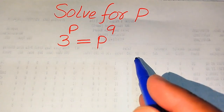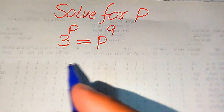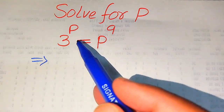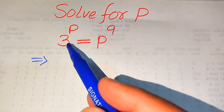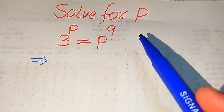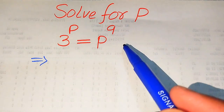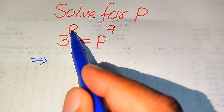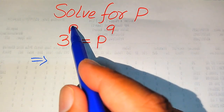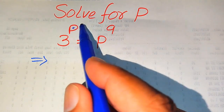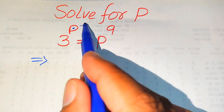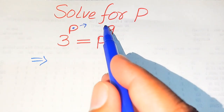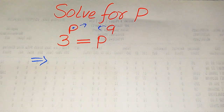Now we move towards the solution of this problem. The very first thing we are going to do is move all the variable terms from the left-hand side to the right-hand side, and move the constant terms from the right-hand side to the left-hand side. The variable term on the left-hand side is p — we move p to the right-hand side — and the constant term on the right-hand side is 9, which we move to the left-hand side.